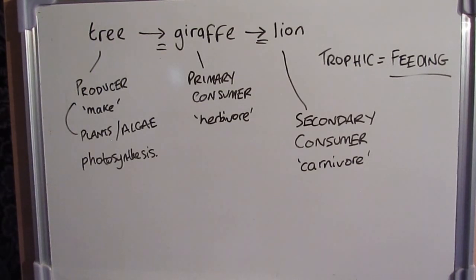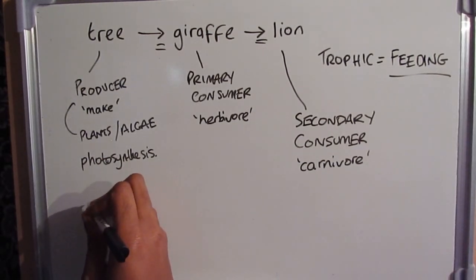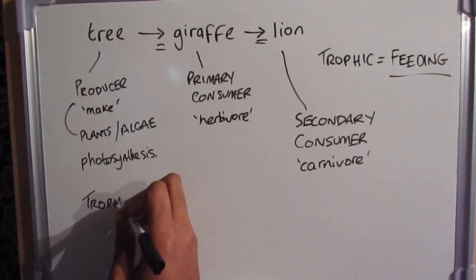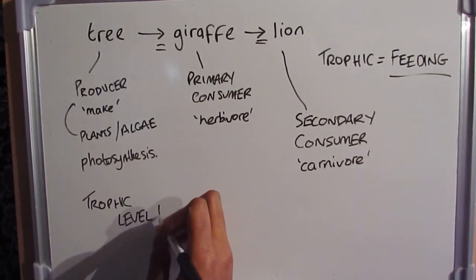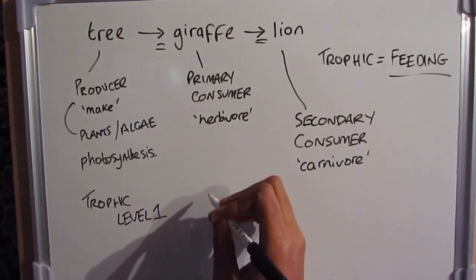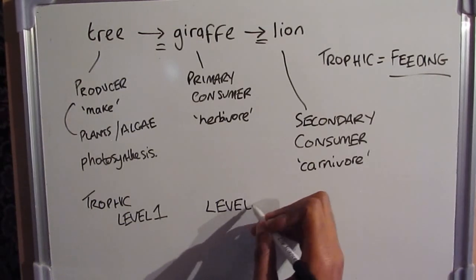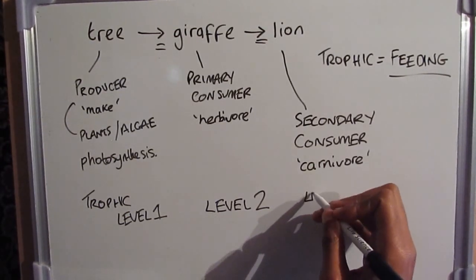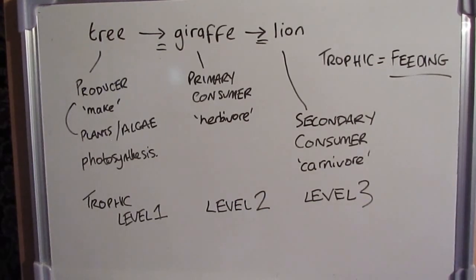We've got three parts to our food chain — so where do trophic levels come in? At the start of the food chain is trophic level one, so the tree (the producer) is trophic level one. The giraffe is trophic level two, and the lion is trophic level three.